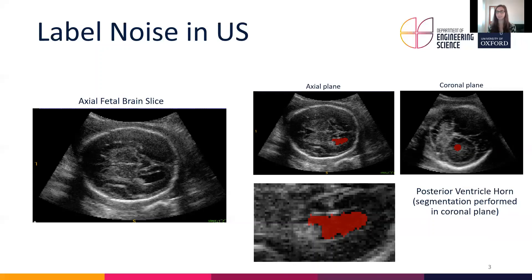Another problem, which you can see on the right, is the segmentation in 3D. The posterior ventricle horn has been segmented on the coronal planes. As you can see, in this plane the segmentation looks quite good and smooth, but in the axial plane the resulting segmentation is very jagged and not very accurate.